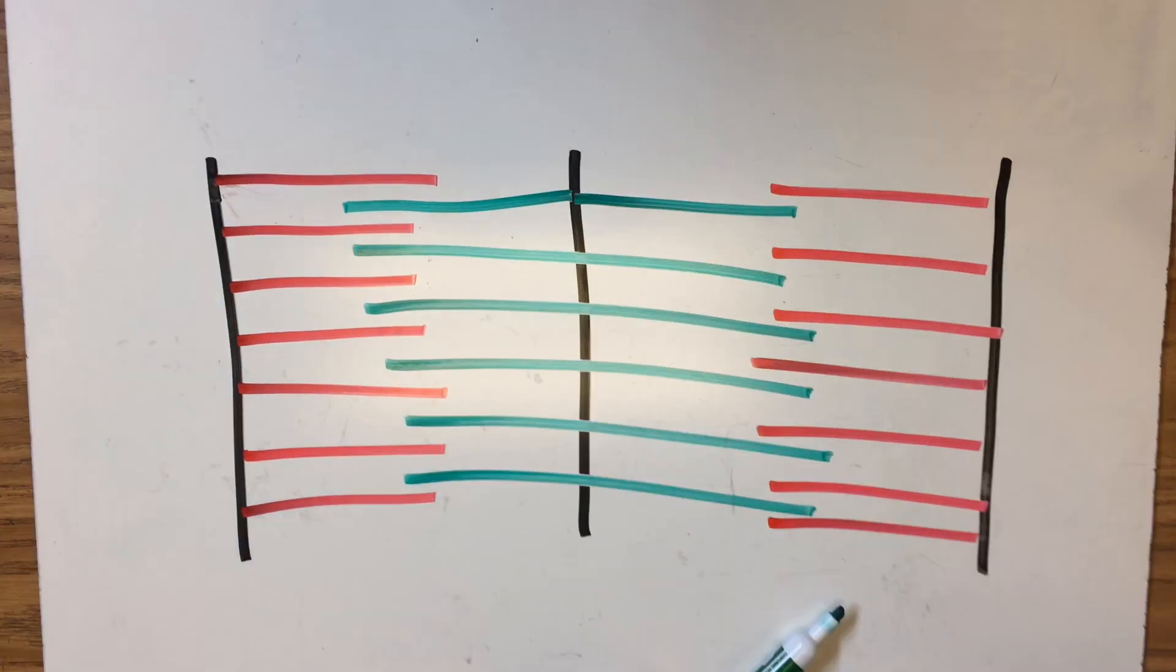Before we go any further we need to know basic vocabulary. This is called one sarcomere, an individual cylindrical unit in the myofibrils. Myofibril is a cylindrical structure that carries out contraction.